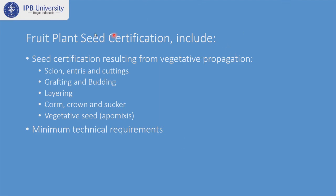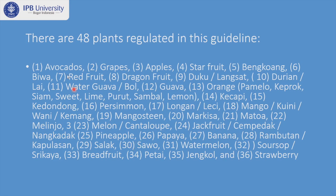Based on the regulation, fruit plant seed certification includes seed certification resulting from vegetative propagation — specifically scion and dress cutting, grafting, budding, layering, comb crown and sucker, and vegetative seeds such as apomixes. It also regulates minimum technical requirements. There are 48 plant commodities regulated in this guideline, starting from avocado and others, and this number has always increased over time.